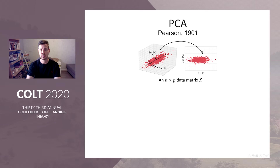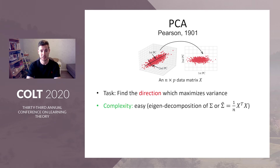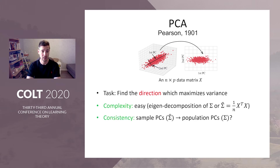Principal component analysis is a widely popular tool for visualization of high-dimensional data. The task is to find the direction which maximizes the variance, and this is performed by computing the leading eigenvector of the population covariance matrix, or more commonly, the leading eigenvector of the sample covariance matrix sigma-n, which is computed from the data.